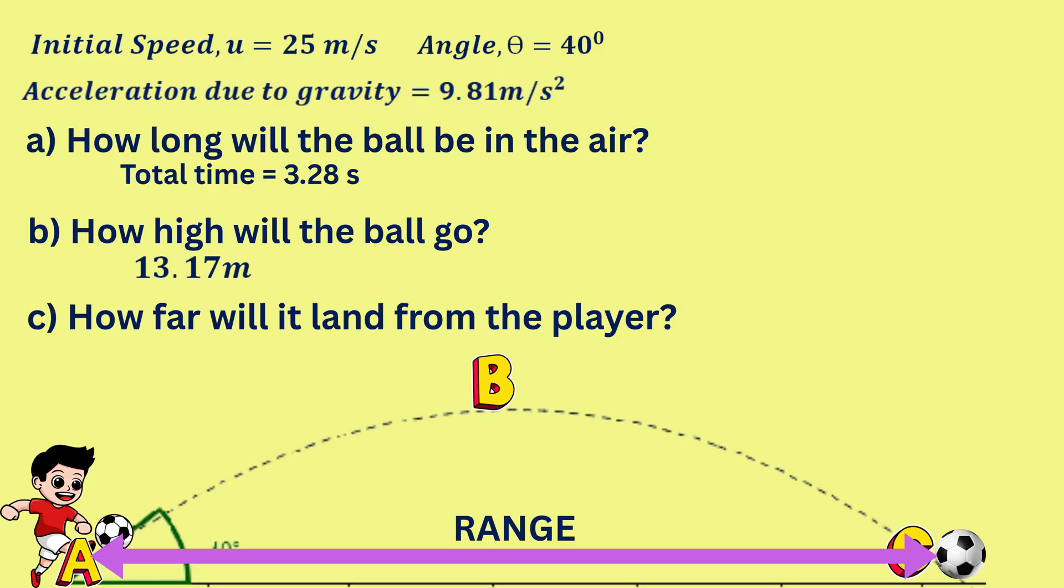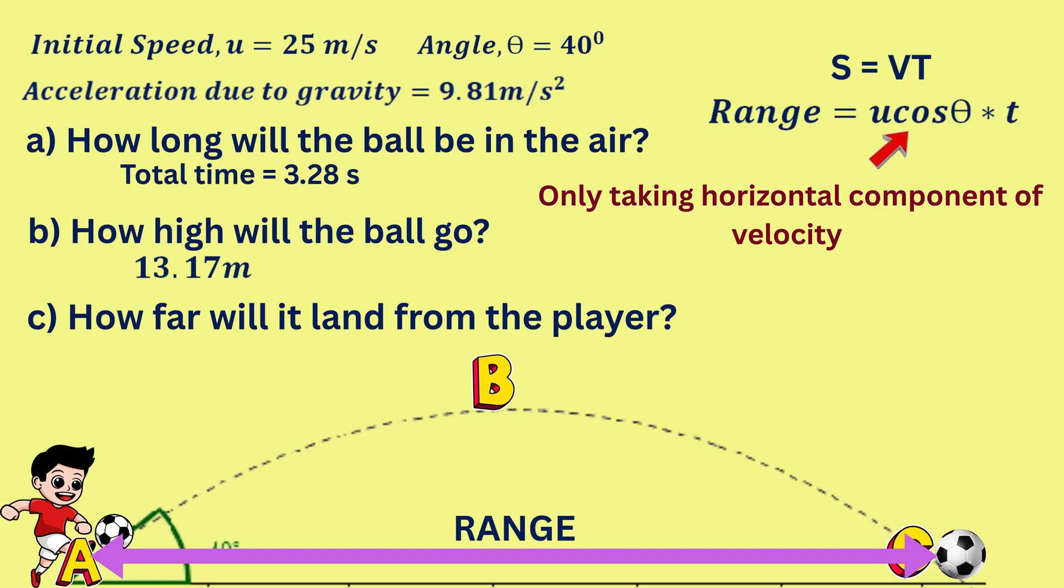Recall that displacement is equal to average velocity times time. We want the horizontal distance travelled, so we use the horizontal component of the velocity, which is always u cosine theta. So the range is u cosine theta times total time in the air represented by t,